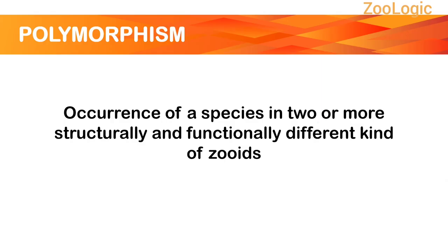Before we unravel the term polymorphism, let's take an example of human beings. As we all are familiar with the fact that humans are a single species with similar morphological and anatomical features. Sexes are separate, that is, sexual dimorphism, but other than that, we share the same structure.